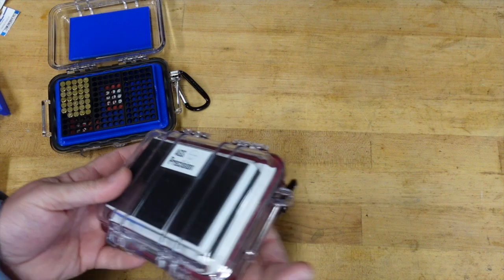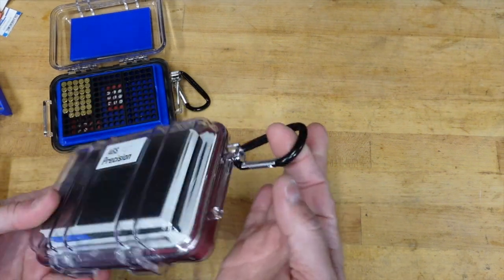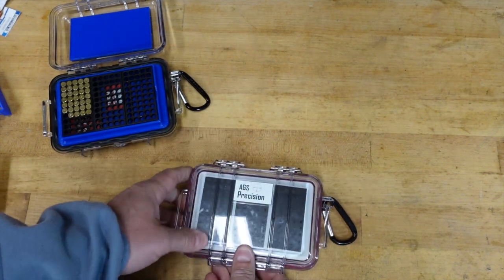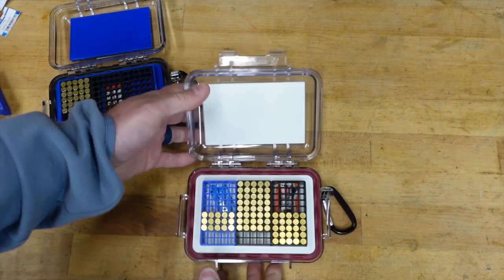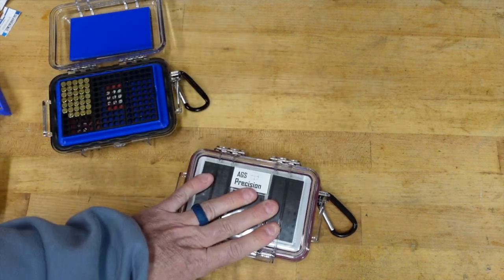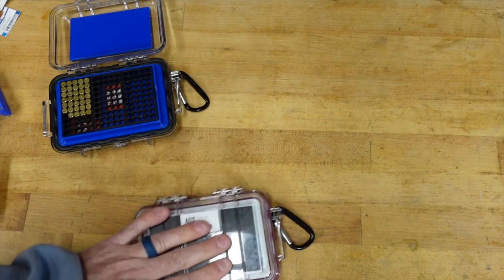If you are a serious 22 competitor and you typically travel with about 150 rounds, which at least from what I found that's more than enough for the average match, if you go to really big matches you can always get two of them. Then grab one of these AGS precision cases. He also does include, I forgot to mention it, these carabiners.